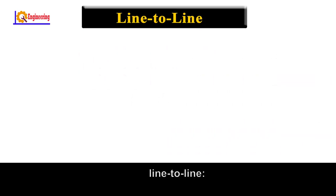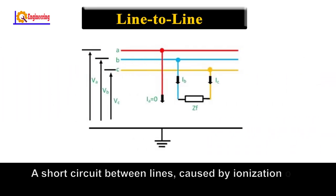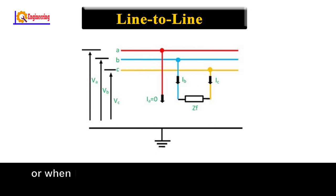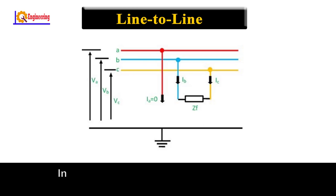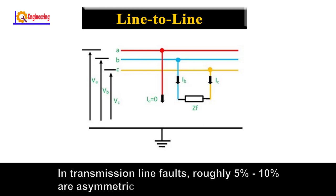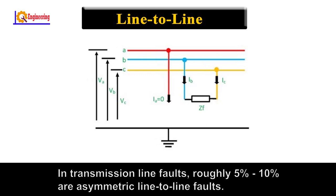Line-to-line: A short circuit between lines caused by ionization of air or when lines come into physical contact, for example, due to a broken insulator. In transmission line faults, roughly 5% to 10% are asymmetric line-to-line faults.